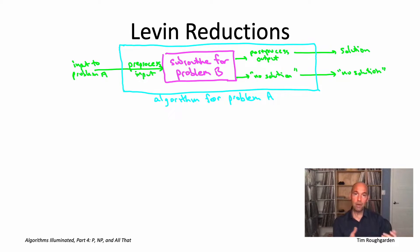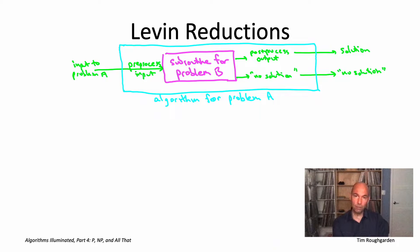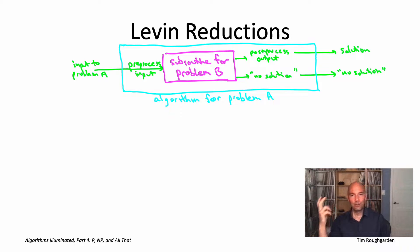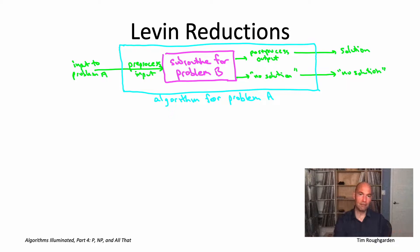On the other hand, if the magenta box returns a feasible solution to the instance of B it was given, then with a polynomial amount of postprocessing, the Levin reduction has to transform it into a feasible solution of the instance of A that it started with.